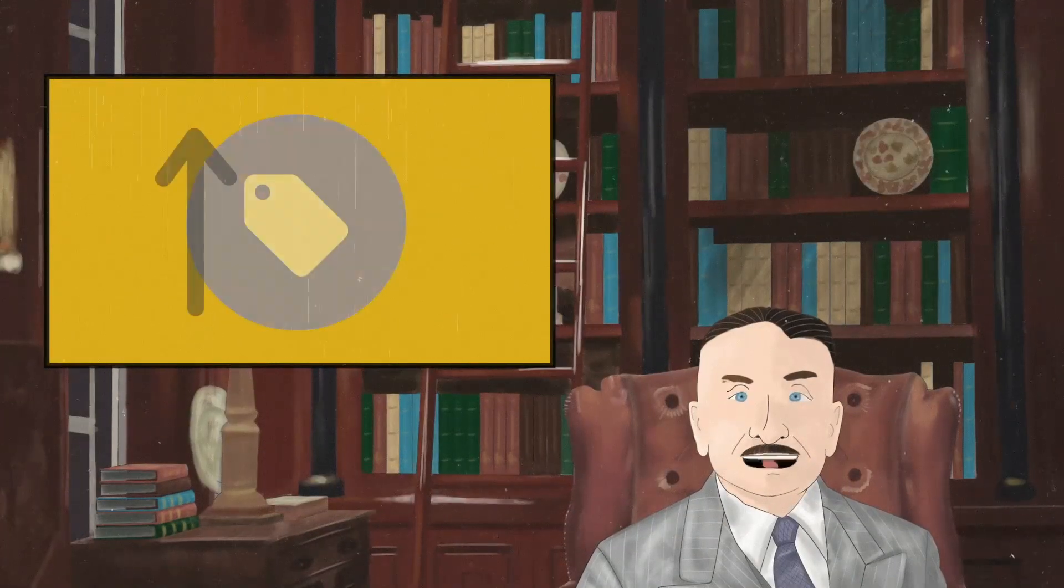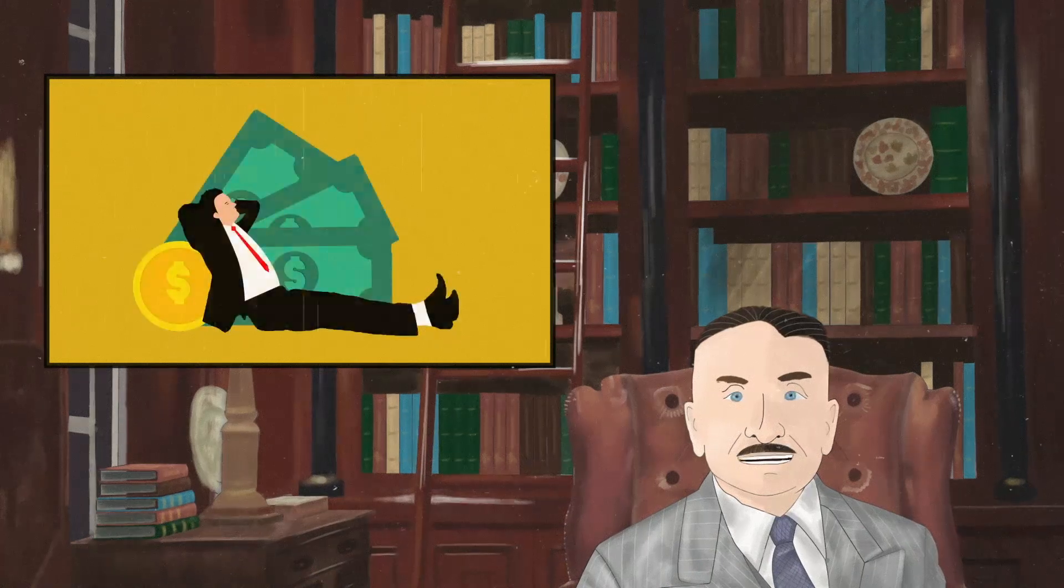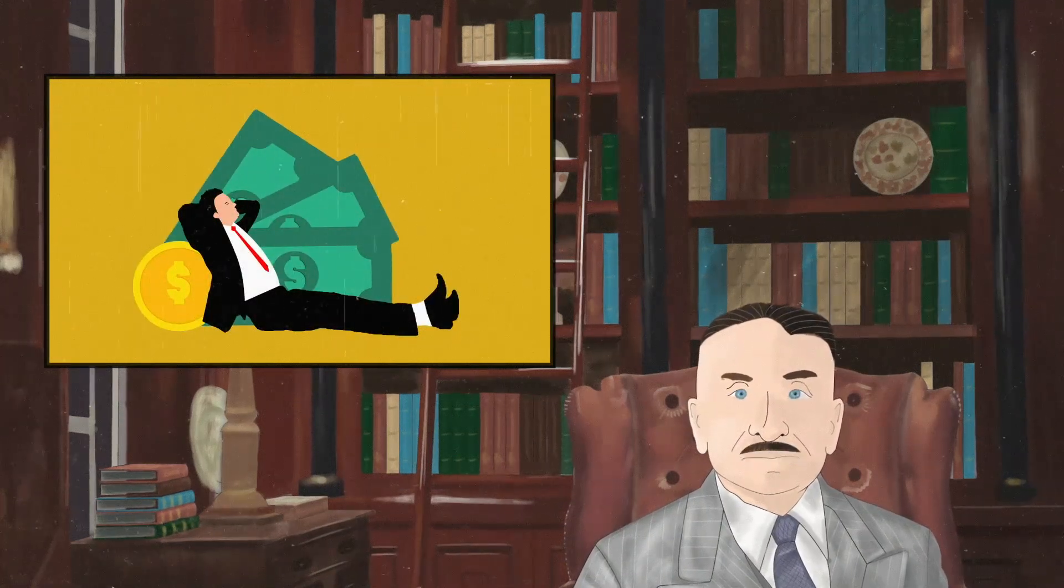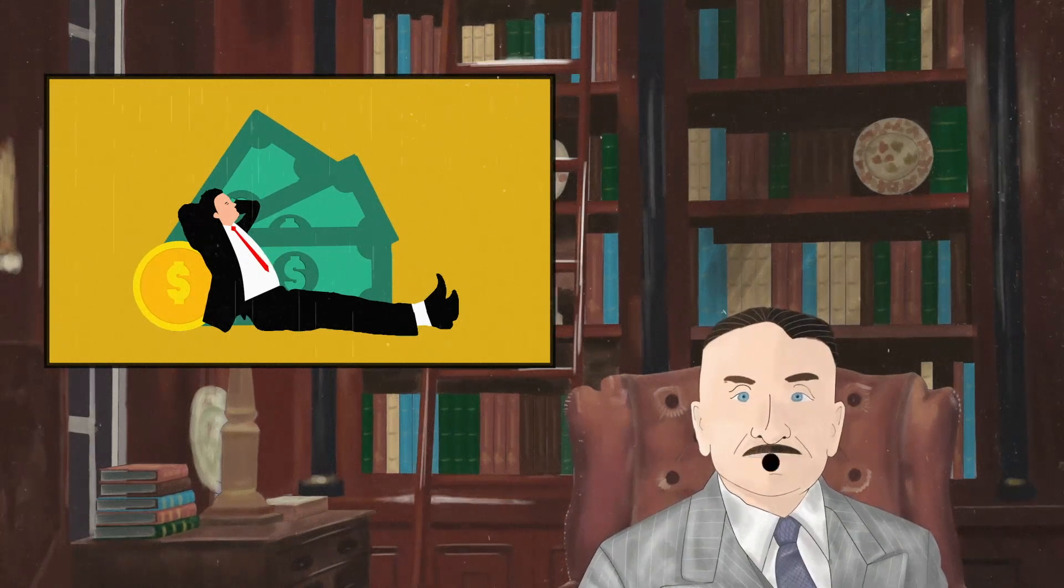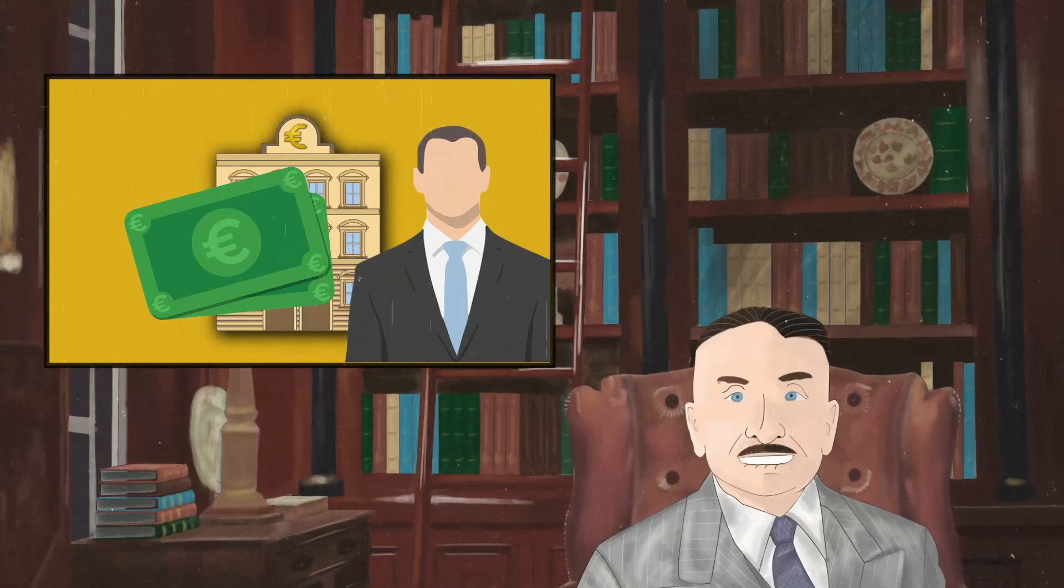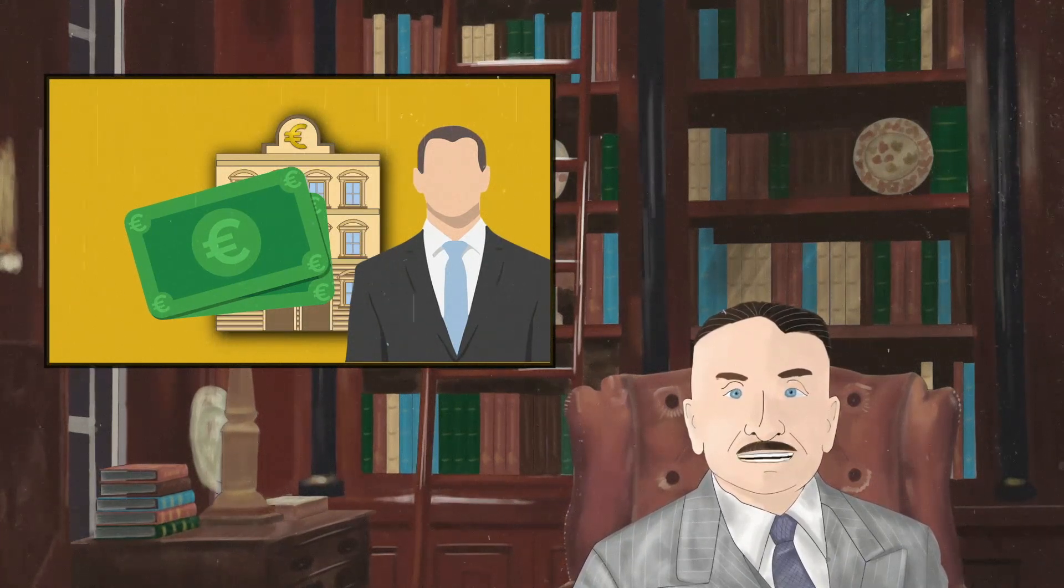You see if inflation is the rise in prices, a layman can be convinced that the fault is with greed and opportunism, that of businessmen who want ever greater profits. But if inflation is the massive expansion of the money supply, then the blame lies with governments and their respective central banks for abusing their monopoly over currency.